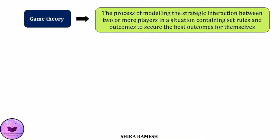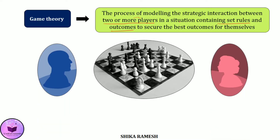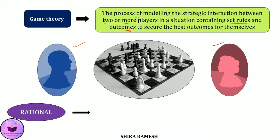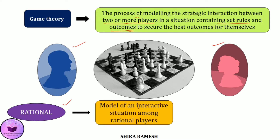Game theory is the process of modeling the strategic interaction between two or more players in a situation containing a set of rules and outcomes. It simply means when two players interact with each other, like in the case of chess, the outcome is determined by the actions of both players. An important thing to note is that the players or decision makers in game theory are assumed to be rational. So game theory basically serves as a model of an interactive situation among rational players.